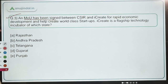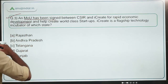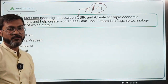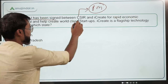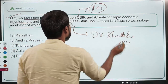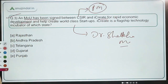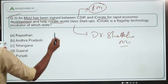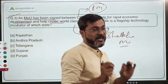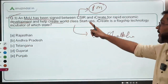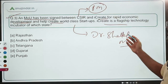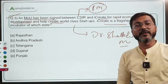Moving to question number three: an MOU has been signed between CSIR and iCreate for rapid economic development. The chairperson of CSIR is the Prime Minister of India as ex-officio chairperson, and the Director General is Dr. Shekhar Mande. This MOU between CSIR and iCreate has been signed for rapid economic development and to help create world-class startups.